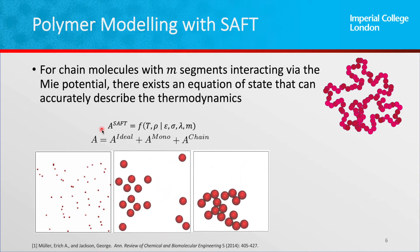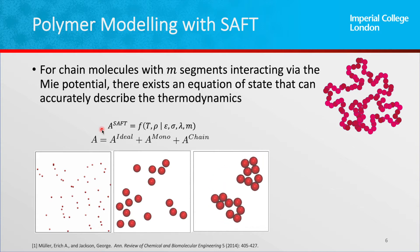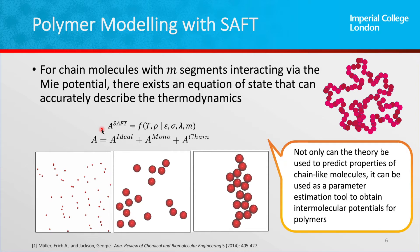By taking into account these three contributions, we have a very accurate representation of our polymer systems if we assume that a polymer is a chain of tangentially bonded spheres. This provides a very useful tool because we have a full description of a Mie fluid of any chain length. This can be used as a parameter estimation tool — not only can we predict the properties of any Mie fluid, we can actually predict properties of real fluids by fitting our models to experimental data.